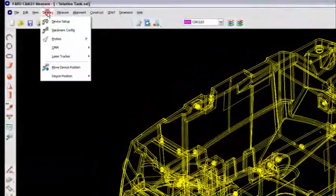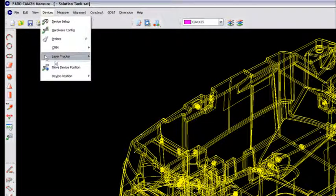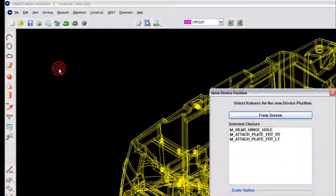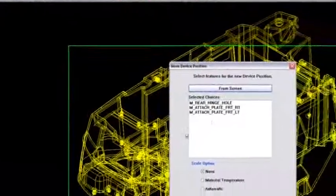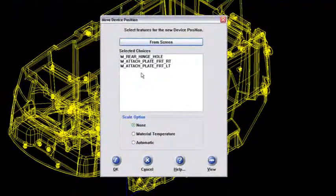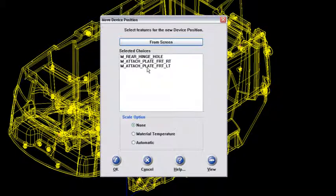So to do the leapfrog, I'm going to go into the Devices menu, and then I'm going to go here to the Move Device Position. And then this screen will come up, and it'll give you choices that you can use to leapfrog around. And these three are point-reducible features. I love using holes. I love using slots. I love using the cones or spheres, three spheres. Minimum of three.